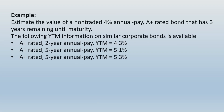Consider this example: estimate the value of a non-traded 4% annual pay A+ rated bond that has 3 years remaining until maturity. The following YTM information on similar corporate bonds is available — all three are A+ rated. There is a 2-year annual pay bond with a YTM of 4.3%, and then two 5-year bonds with slightly different YTMs.